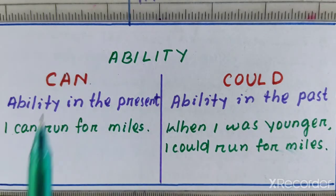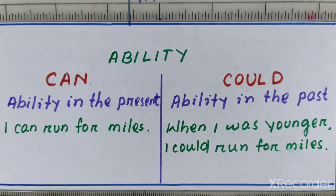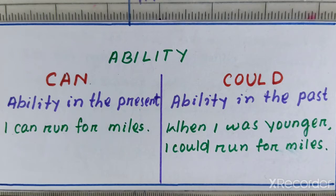Number one: ability. Can is used to show ability in the present, while could is used to show ability in the past. For example, 'I can run for miles.' Here, can is used to show the present ability of running miles. Now looking into an example where could is used: 'When I was younger, I could run for miles.' Here, could is used to show past ability — currently I am not capable of running, but previously, in the past, I was capable of running.